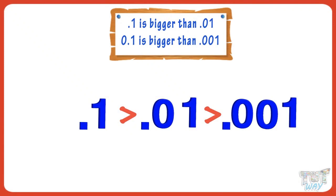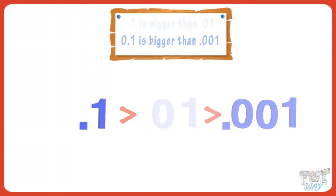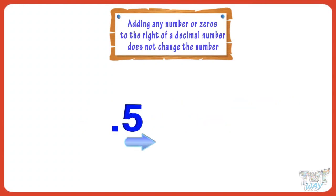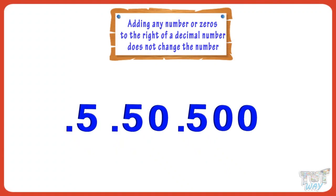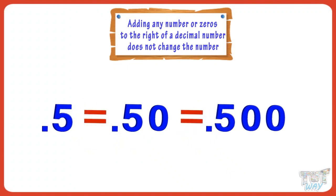Kids, here is a very important rule for you to remember: adding any number of zeros to the right of a decimal number does not change the number. So, 0.5, 0.50, and 0.500 are all the same.